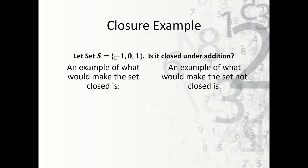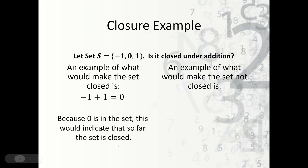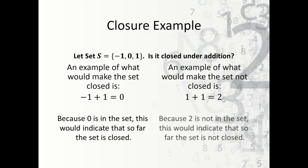Here's an example: the set {−1, 0, 1}. Is it closed under addition? Negative 1 plus 1 equals 0, which is in the set. But 1 plus 1 equals 2, and 2 is not in the set. Therefore the set is not closed under addition. Even if most combinations stay inside the set, just one example outside the set means the whole set is not closed.